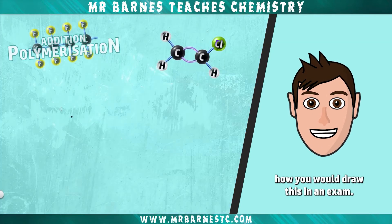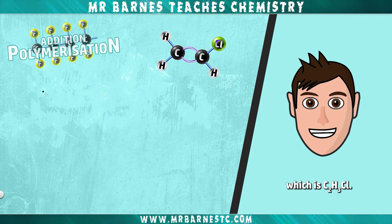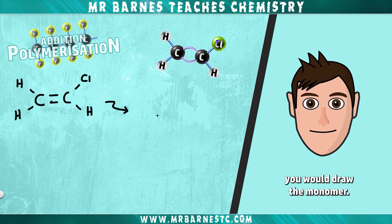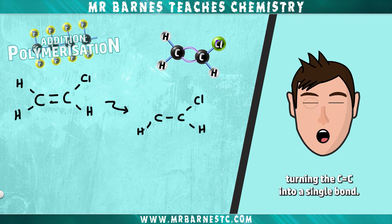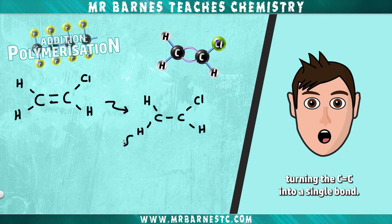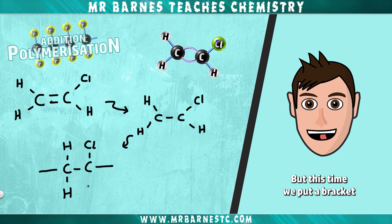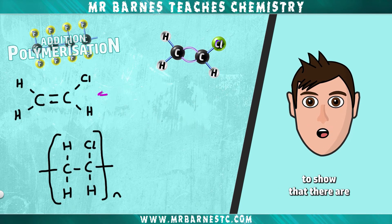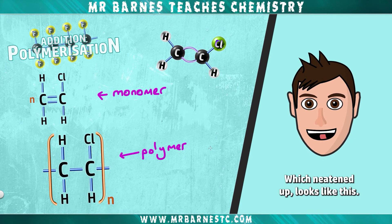Let's see how you would draw this in an exam. We're going to start off with this monomer, which is C2H3Cl. This is how you would draw the monomer. The next thing you need to do is break the double bond, turning the C double bond C into a single bond, and then after we've done that we redraw it. This time we put a bracket around the outside and an N in the bottom corner to show that there are many of them joined together, which neatened up looks like this.